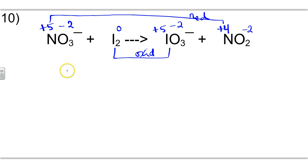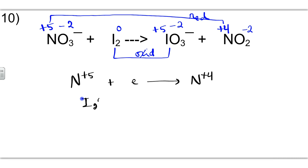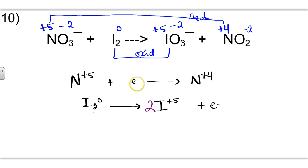Now we'll write our half-reactions. Add electrons to the left side because the oxidation state of plus 5 is higher than plus 4. Add electrons to the right side because the plus 5 oxidation state is higher than 0. Because we have a 2 here, we have to also place a 2 here to balance the iodines before we proceed. From 5 to 4, it's a transfer of just 1 electron. From 0 to plus 5, that's a transfer of 5 electrons per iodine.